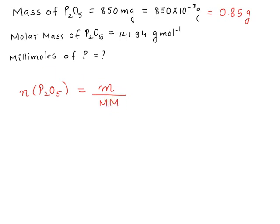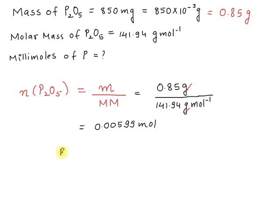We can substitute the values here. Now we can eliminate the gram unit. On solving, we are getting moles of P₂O₅ equals to 0.00599 mole.